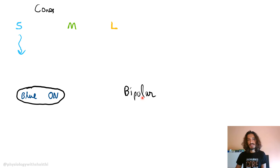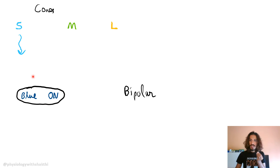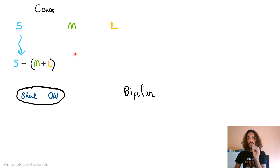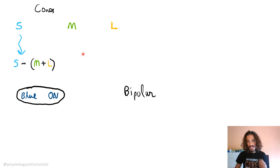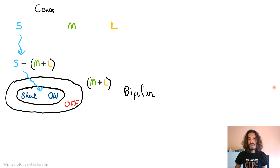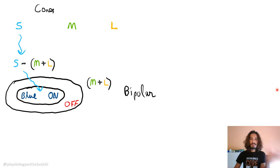The bipolar cell arrangement has on-cells and off-cells. At the center there is a blue-on cell — if activated, it means blue color is being detected. What it detects is essentially blue minus green-and-yellow. It takes impulses from medium and long wavelength cones to form the luminance pathway, and subtracts that from the small wavelength cone signal to activate the blue-on center, with an off-center surround providing blue-yellow contrast.